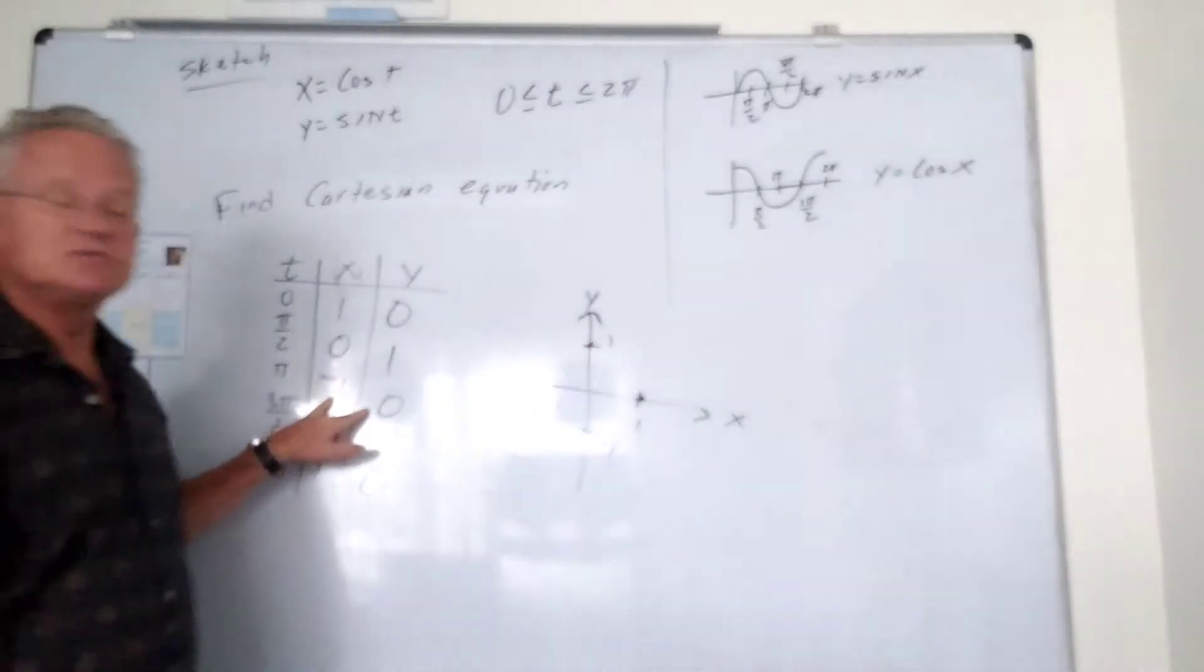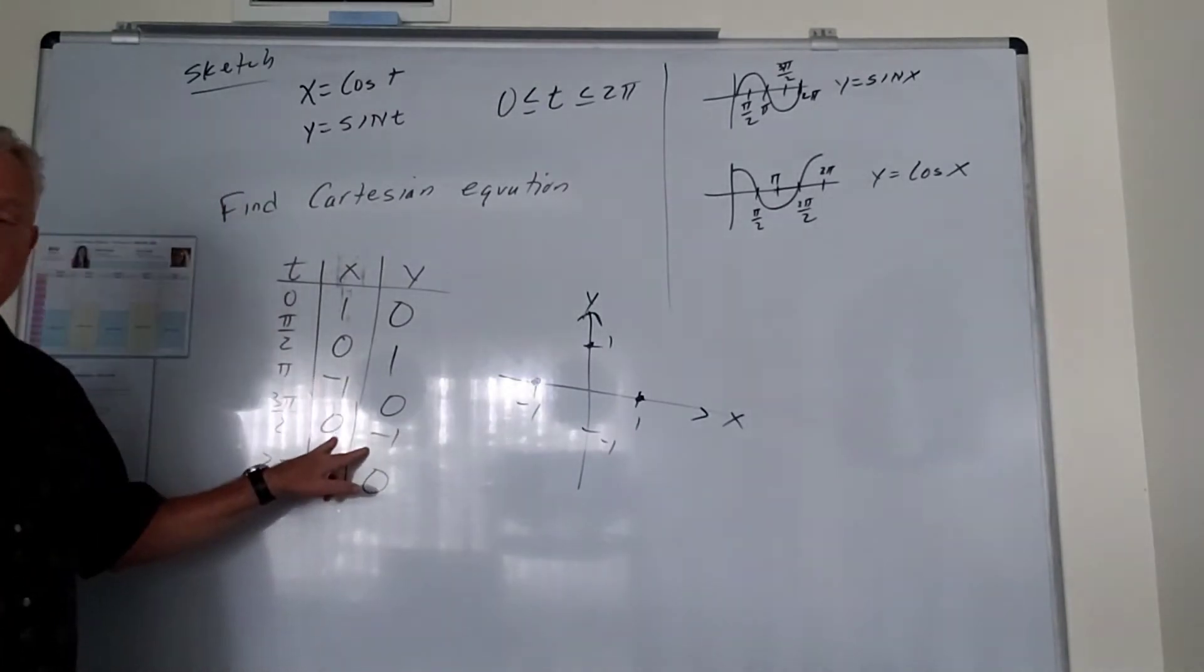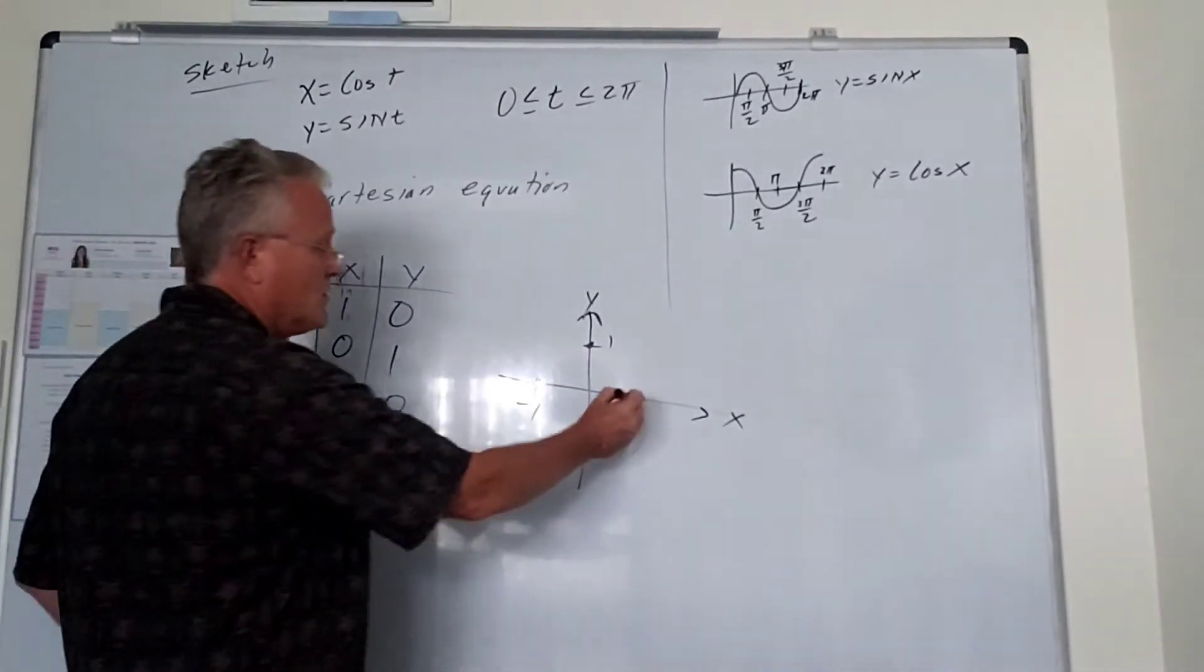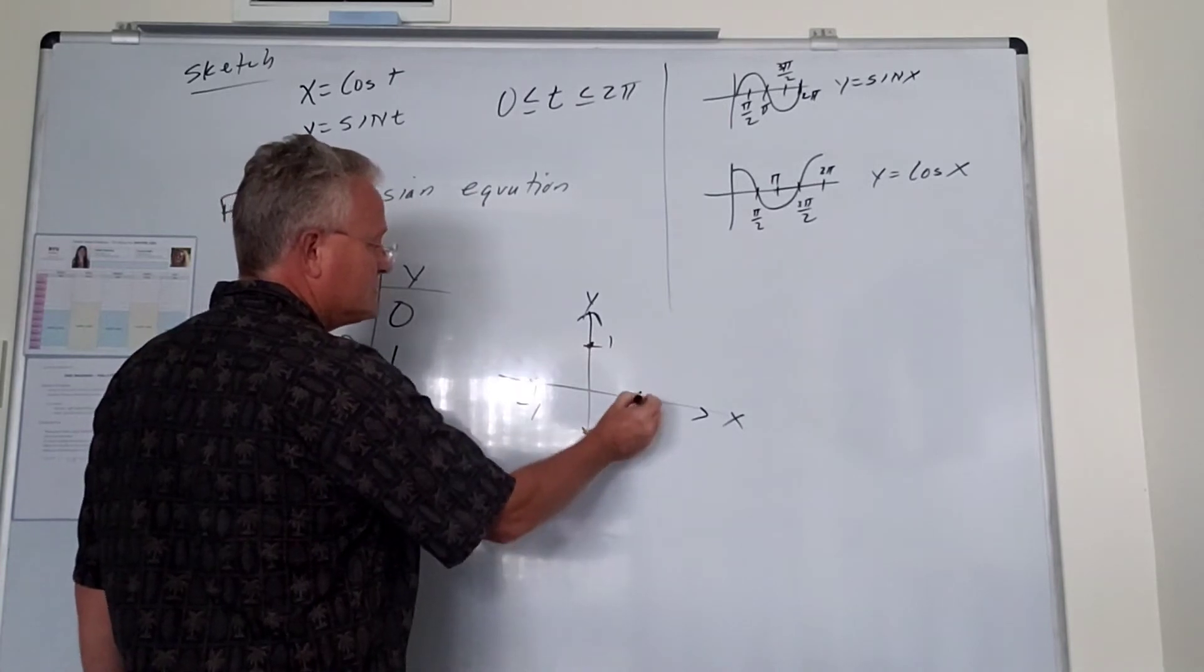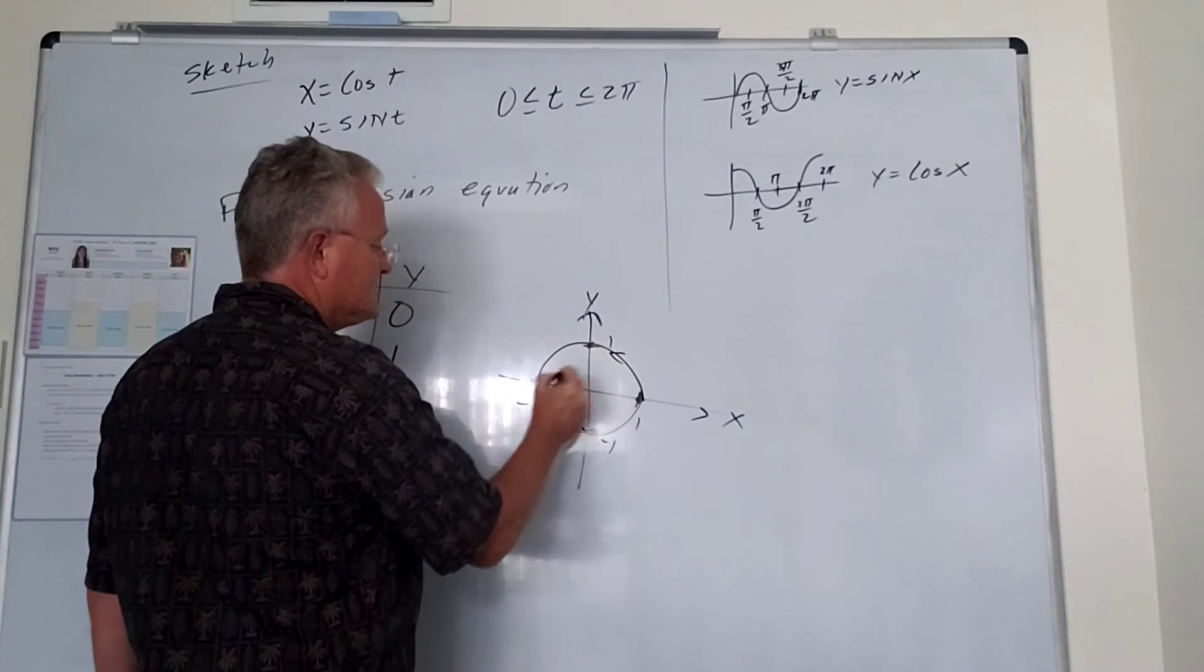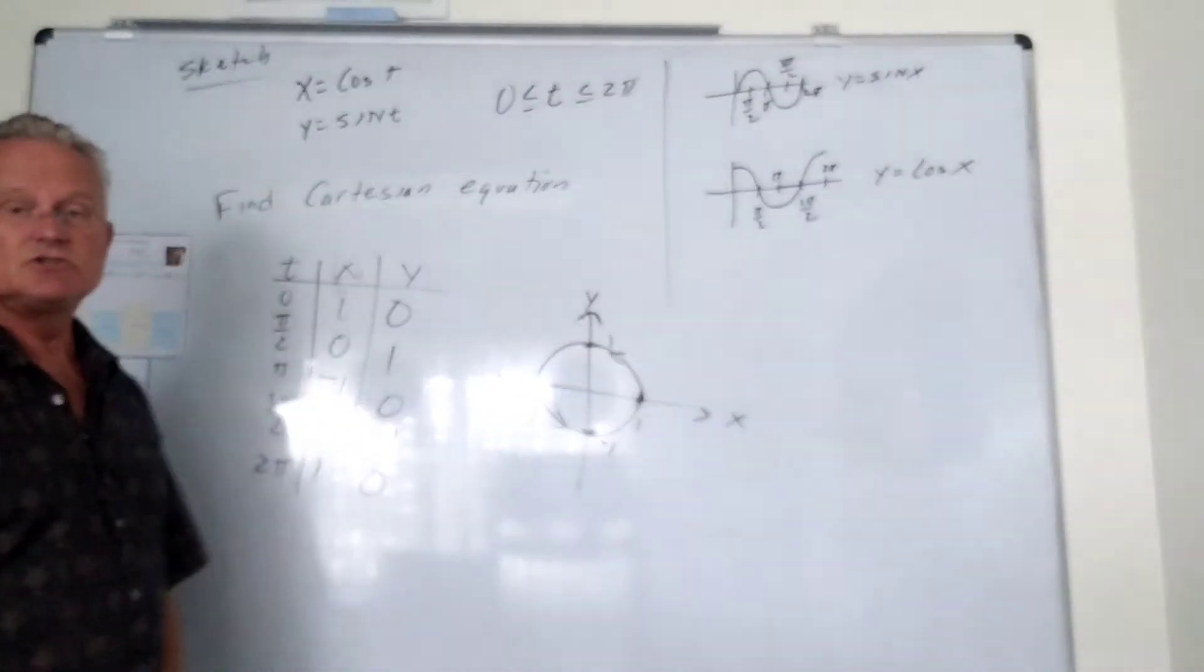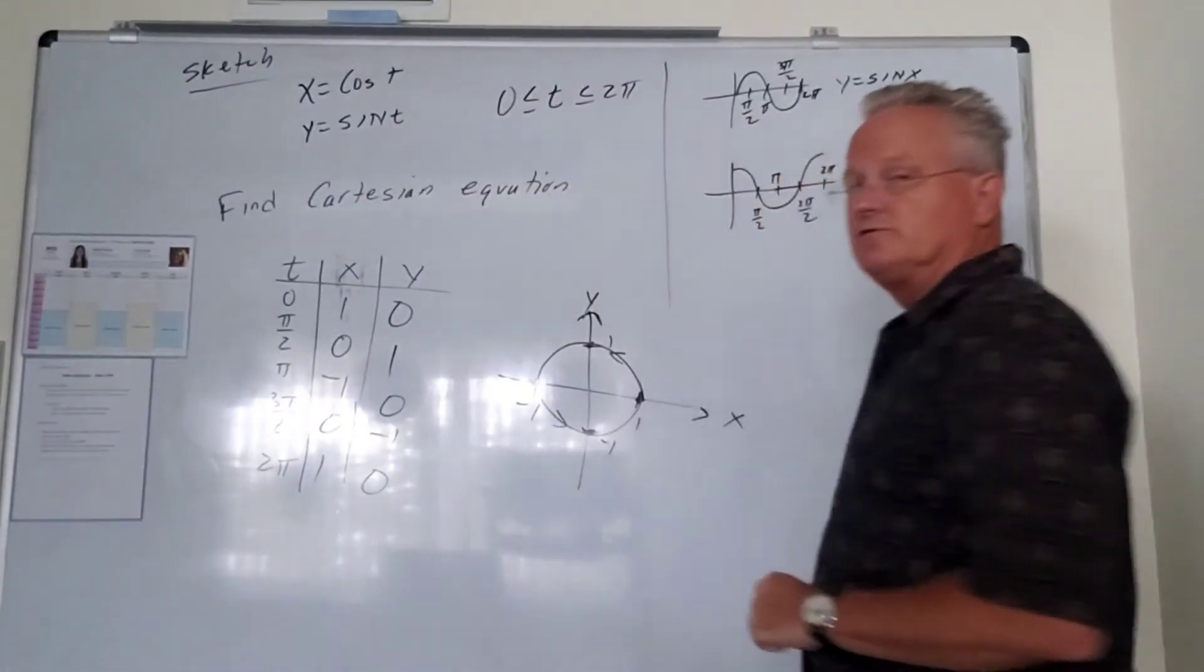At pi, x is negative 1, y is 0. At 3 pi over 2, x is 0, y is negative 1. And at 2 pi, we're back to 1, 0. So we can see, as we plotted these, we went in this direction. So we connect these. The orientation, we notate with these arrows. That's the direction. So we can see this is a circle, a circle centered at the origin with a radius of 1.